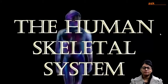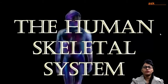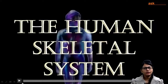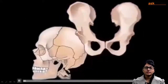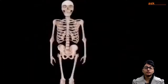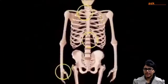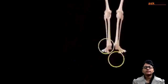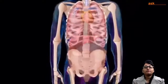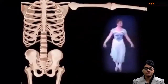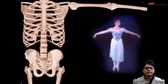Now comes a video through which I am going to explain some details of the human skeletal system. The skeletal system includes all the bones of the body and the joints where they attach to each other. Our skeleton protects our internal organs and provides a framework for movement for performing various activities.